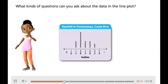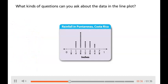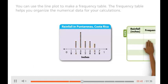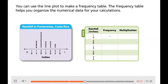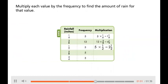What kinds of questions can you ask about the data in the line plot? Here are some possible questions: What was the total amount of rain for the month? What is the difference between the greatest and least amounts of rain? You can use the line plot to make a frequency table. The frequency table helps you organize the numerical data for your calculations. Multiply each value by the frequency to find the amount of rain for that value.